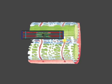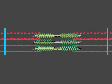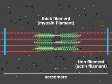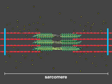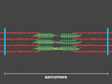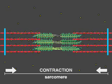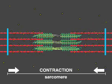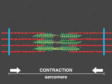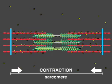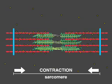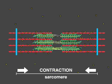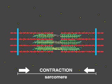Within a contractile bundle of a muscle cell, called a myofibril, the calcium interacts with protein filaments to trigger contraction. In each contracting unit, or sarcomere, thin actin and thick myosin filaments are juxtaposed, but cannot interact in the absence of calcium.